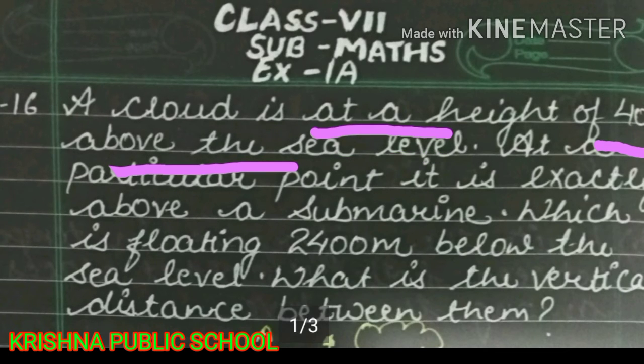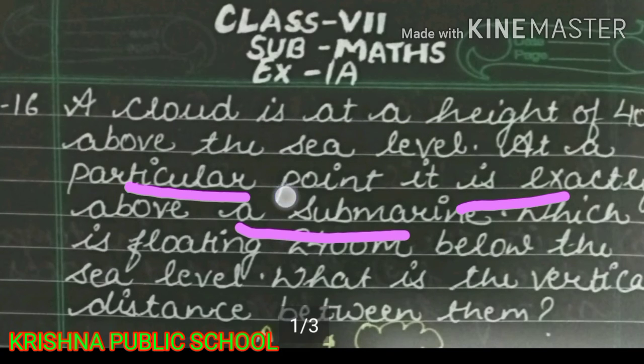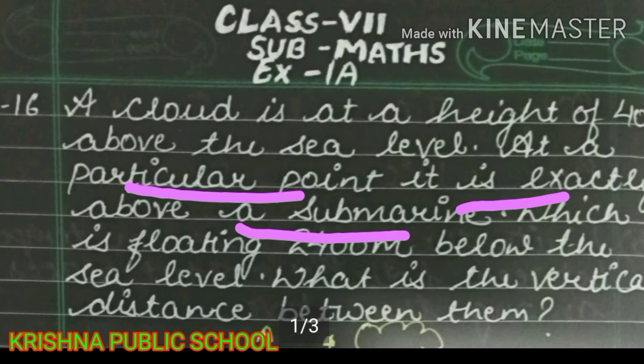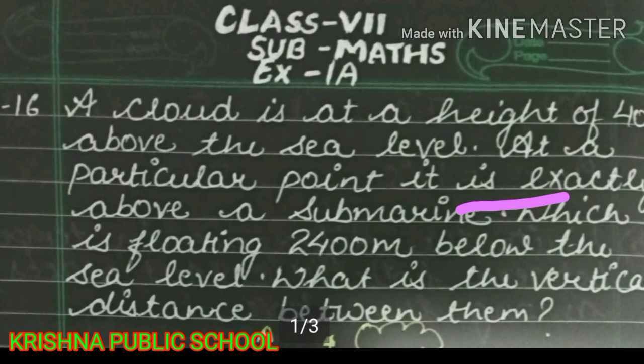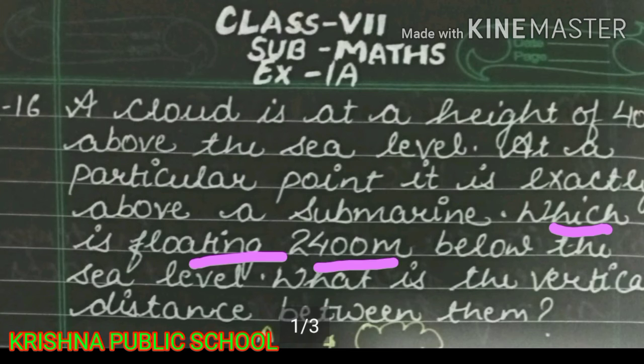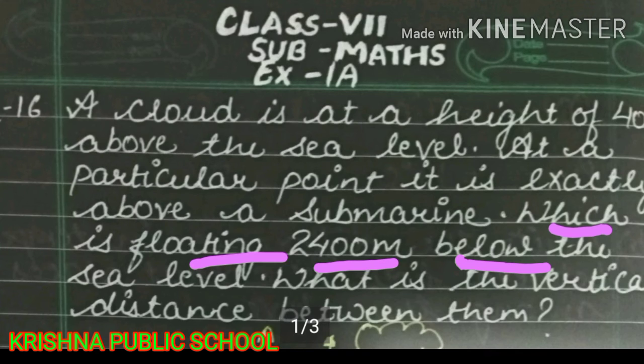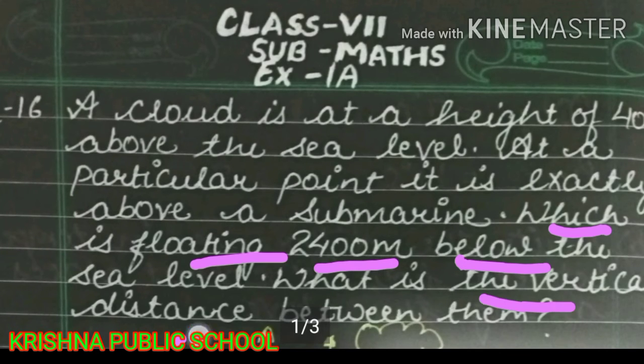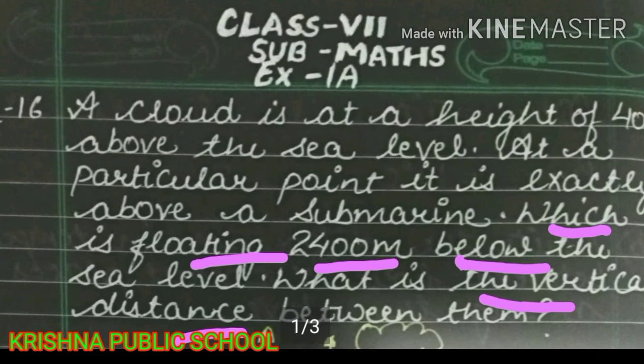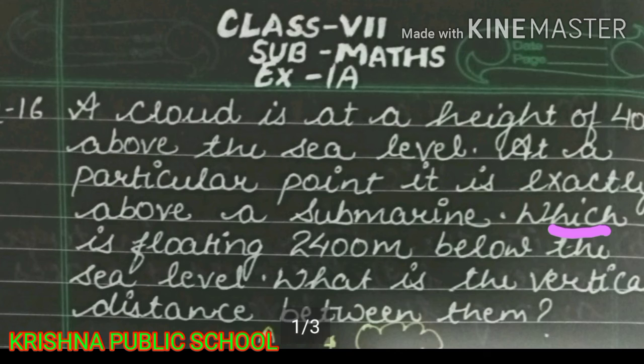At a particular point, it is exactly above a submarine which is floating 2400 meters below the sea level. What is the vertical distance between them? Now we have to find the vertical distance between the cloud and submarine.